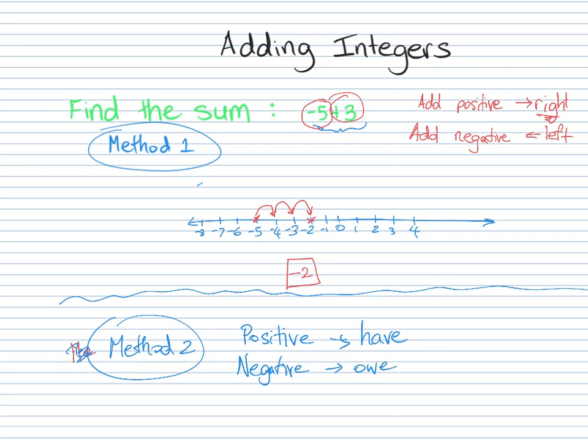In the example, -5 + 3, the positive is money that I have. So I have $3. But I owe someone $5. So that's kind of a bummer, right? I have $3 but I owe $5, meaning even if I pay everything that I have, I still owe money. How much would I still owe? Exactly, I would still owe $2. Which means that in this method, I can see that the answer is -2. If I owe $2, it's the same as saying -2.